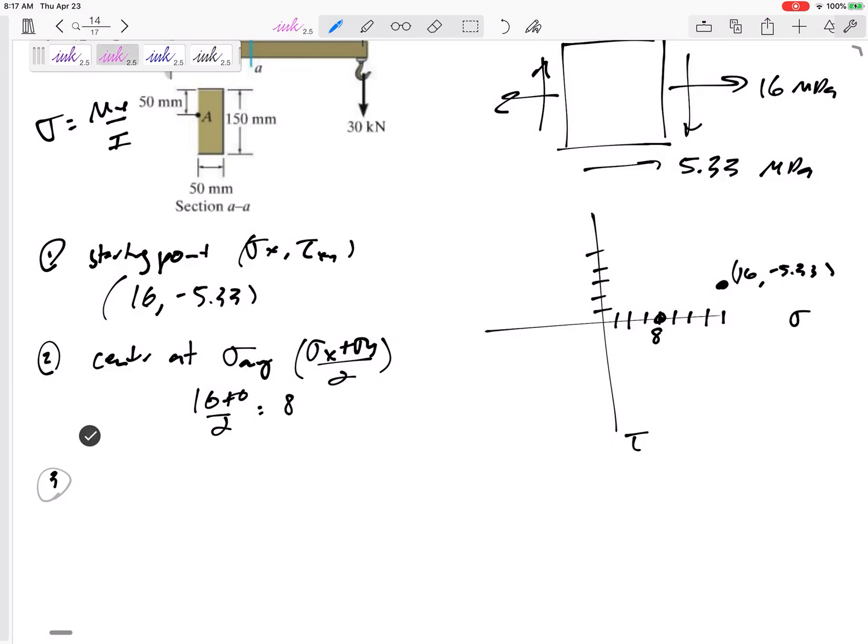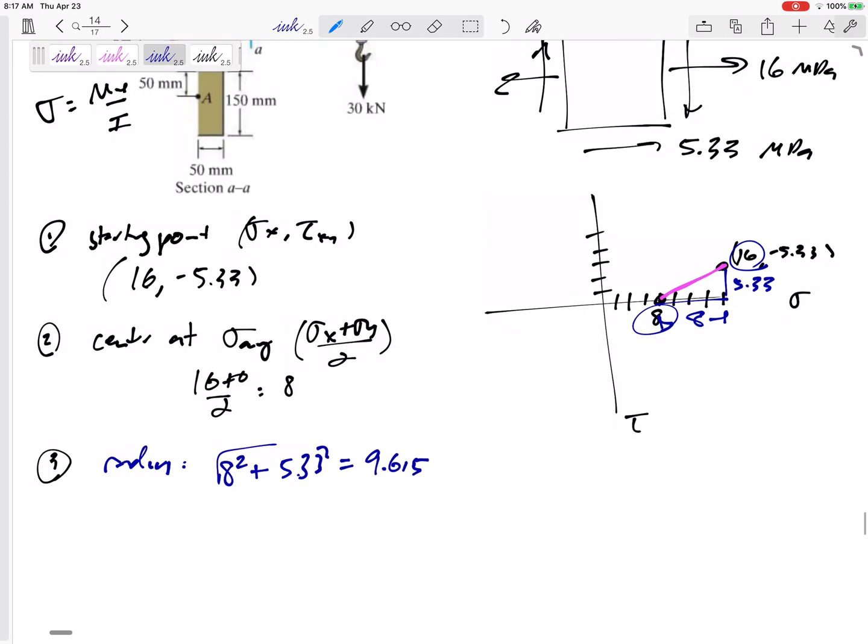Then let's find the radius, the distance between these two. So think real hard about what that base is. The height is 5.33. The base goes from between 8 and 16, so this would be 8. So radius: 8 squared plus 5.33 squared, take the square root, 9.615.